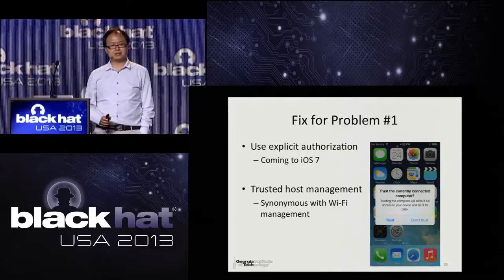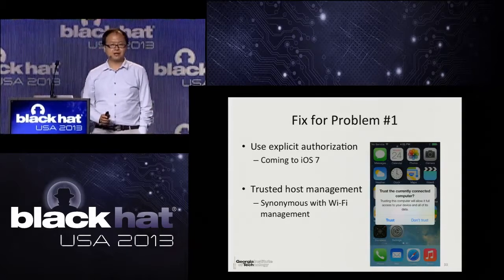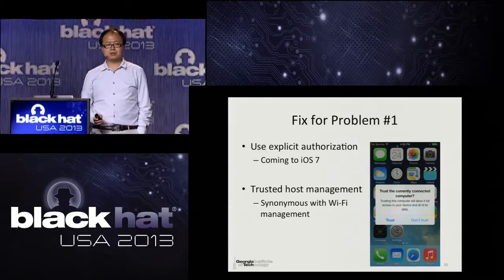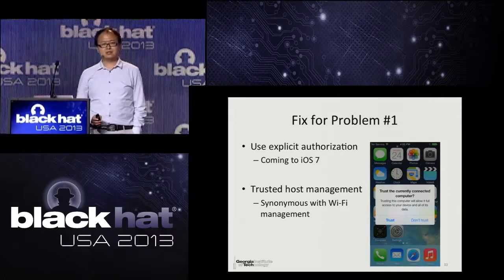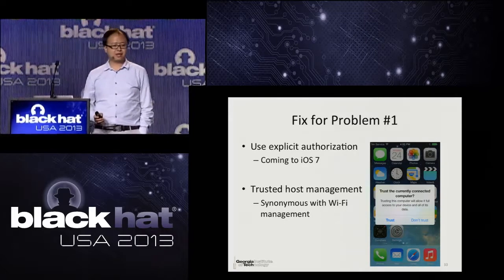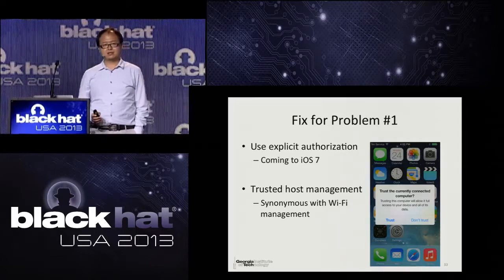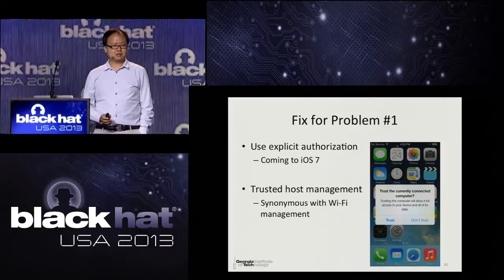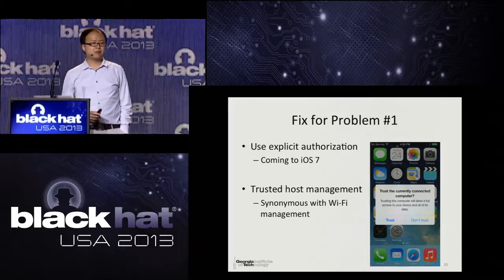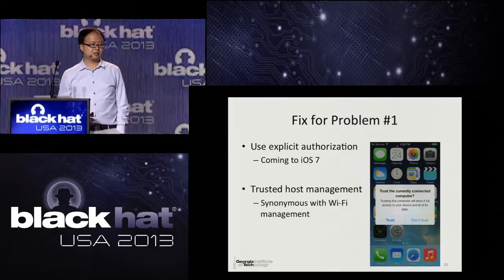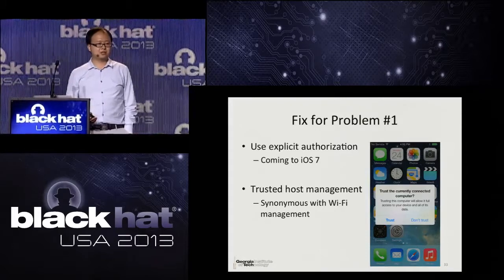To fix this problem, we propose the device should explicitly ask the user to authorize pairing. In fact, after we reported this weakness to Apple, Apple invited us to evaluate what became iOS 7 beta 2. We noticed Apple added a new feature: when you connect the device to a new host, iOS 7 will pop up a window and ask the user whether this host is trusted or not. To fix the permanent pairing problem, we suggest all mobile operating systems should add management functionality allowing users to manage trusted hosts — similar to managing Wi-Fi connections on desktop OS.